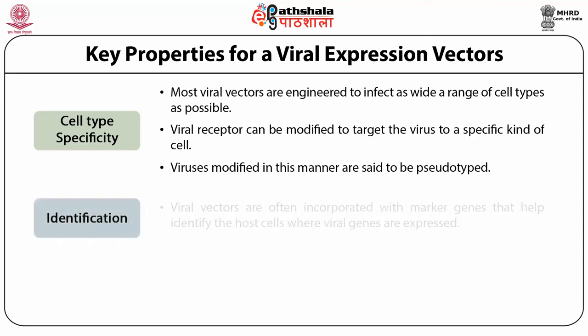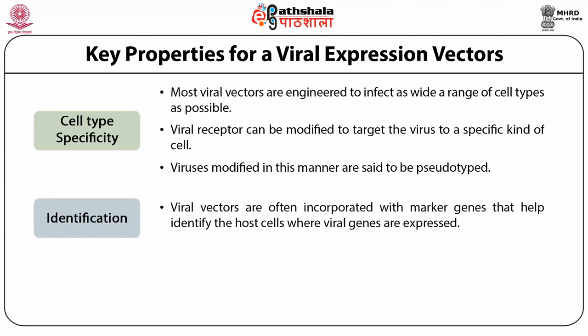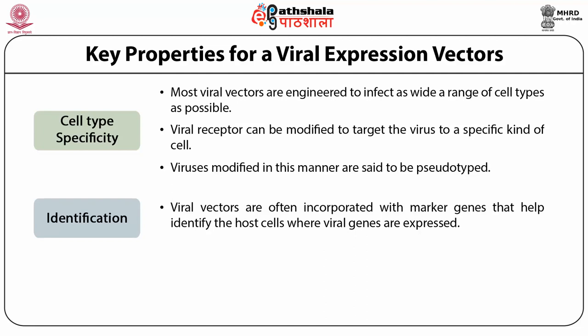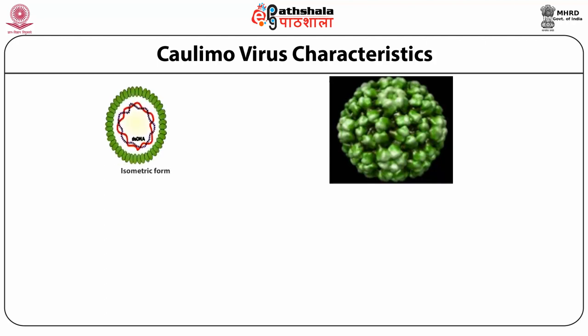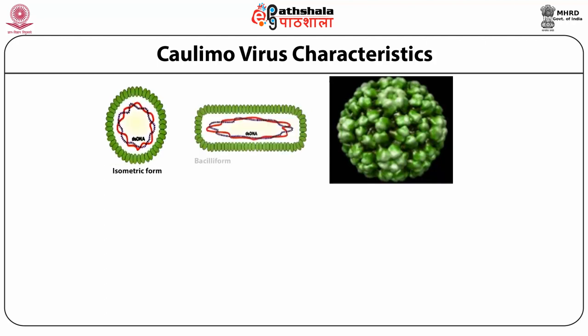Identification: viral vectors are often incorporated with marker genes that help identify the host cells where the viral genes are expressed. We will now take some examples of different types of viruses used to construct vectors. First, caulimoviruses, which are very popular for vector construction.